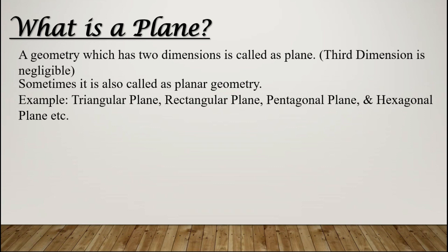Examples of planes are triangular plane, rectangular plane, pentagonal plane, hexagonal plane, and so on. We can also have a semicircular plate or a circle. The examples mentioned here are also called polygons because they have multiple sides. Let us discuss a few triangular planes.